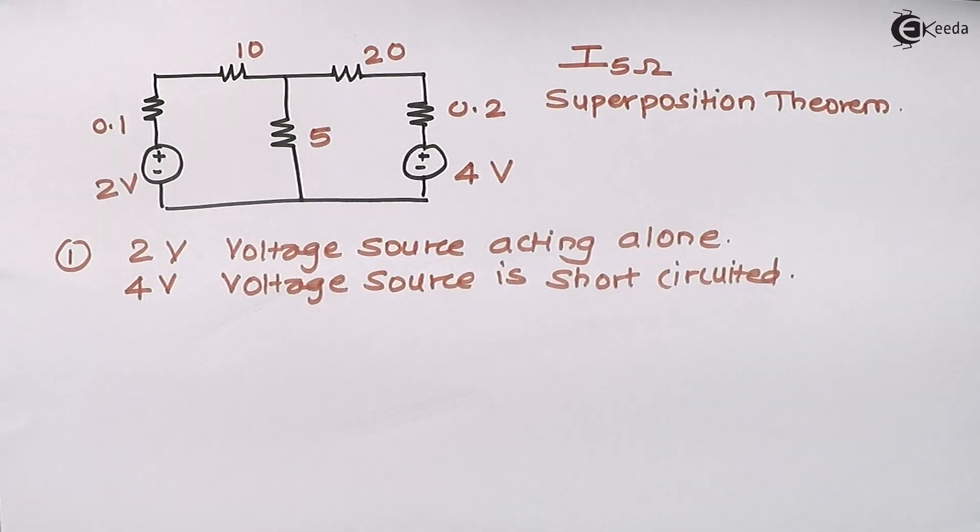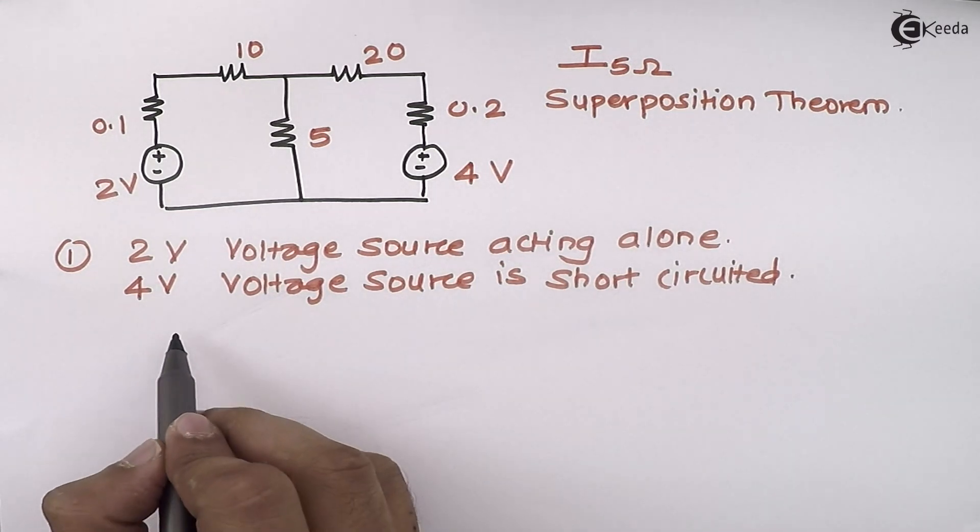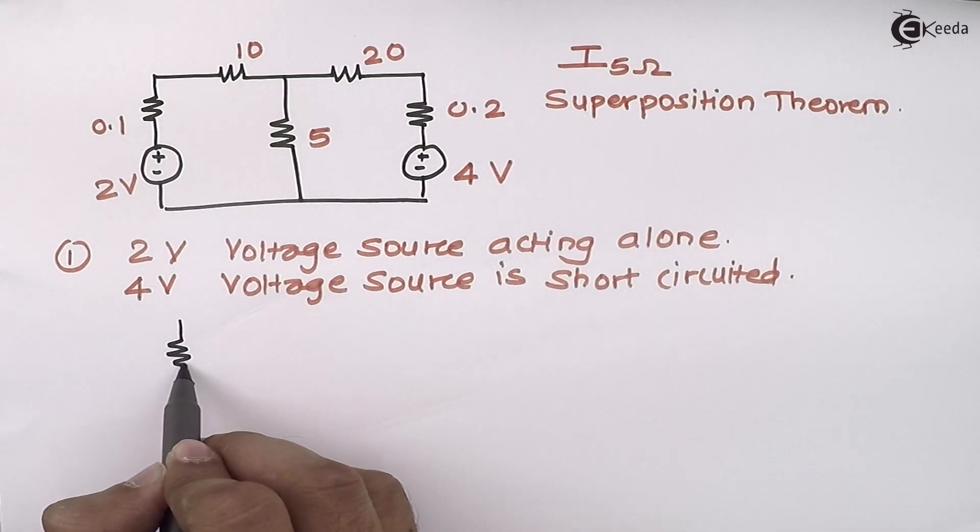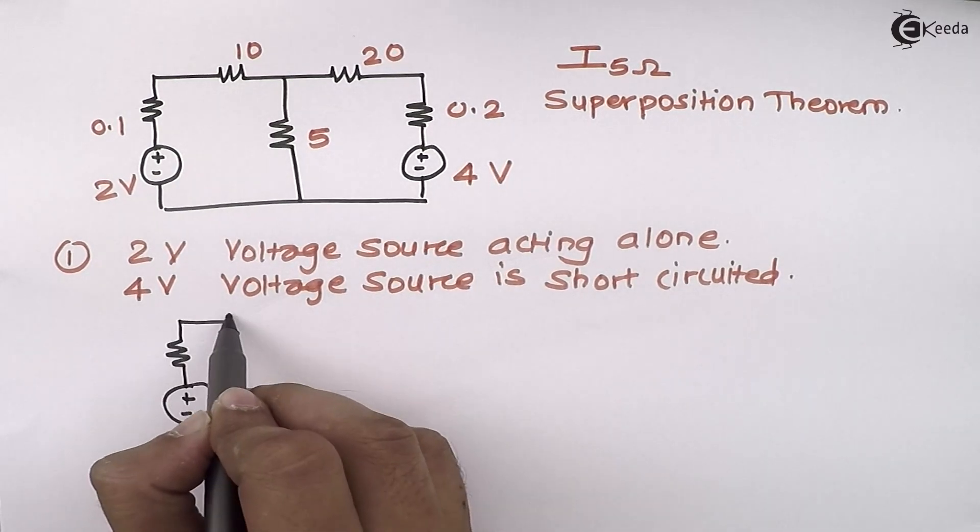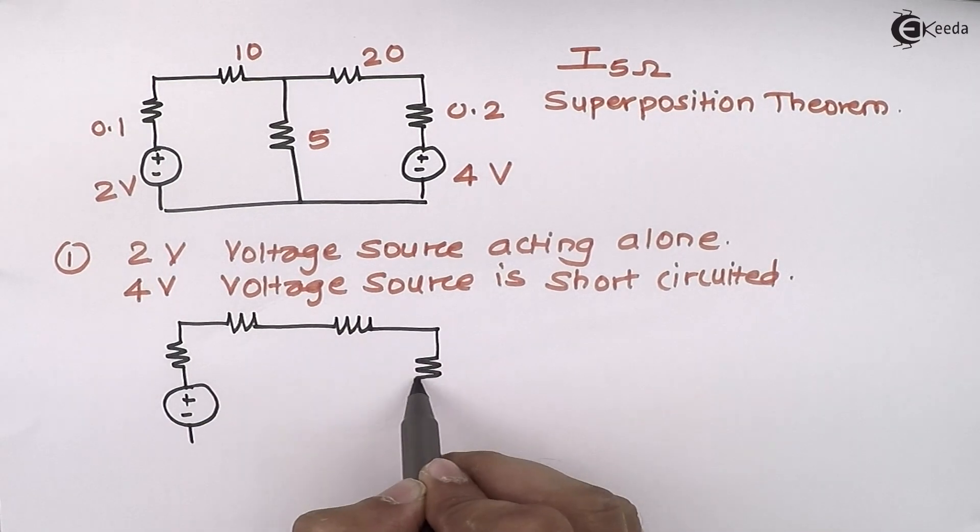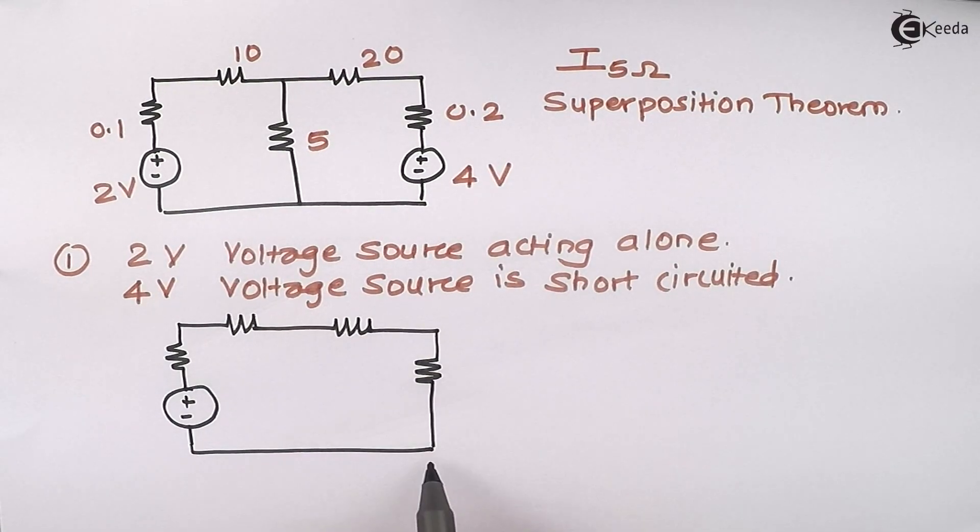So we have done a modification to the original circuit, so we have to redraw it. Let's redraw the circuit by considering this modification. Four volt is short circuited.